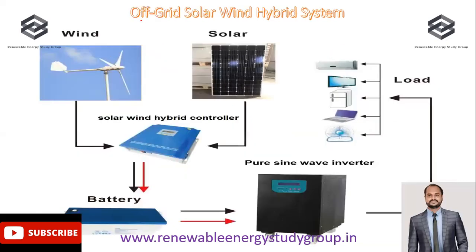The next type is the off-grid or upgraded solar wind hybrid system. In this system, we are not connected to the grid supply. Instead of using grid power at night when the system is not generating, or exporting excess electricity from the wind machine or solar plant, we utilize battery storage and completely exclude the grid supply from the off-grid solar wind hybrid system.